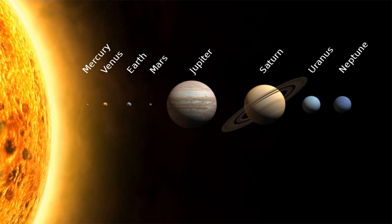6.2.1 Ceres. Ceres, at 2.77 astronomical units, is the largest asteroid, a protoplanet and a dwarf planet. It has a diameter of slightly under 1,000 kilometres and a mass large enough for its own gravity to pull it into a spherical shape. Ceres was considered a planet when it was discovered in 1801 and was reclassified to asteroid in the 1850s as further observations revealed additional asteroids. It was classified as a dwarf planet in 2006 when the definition of a planet was created.